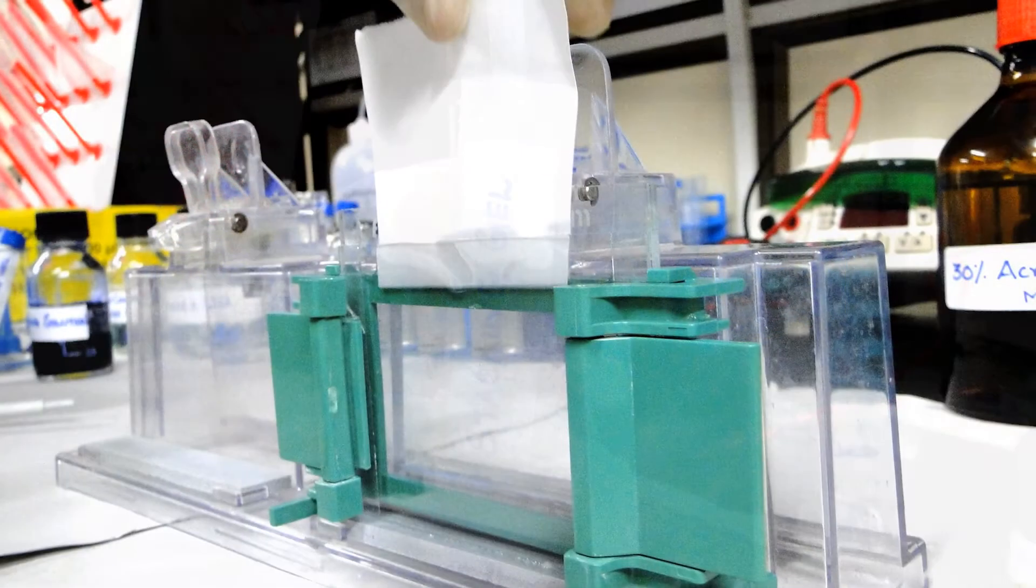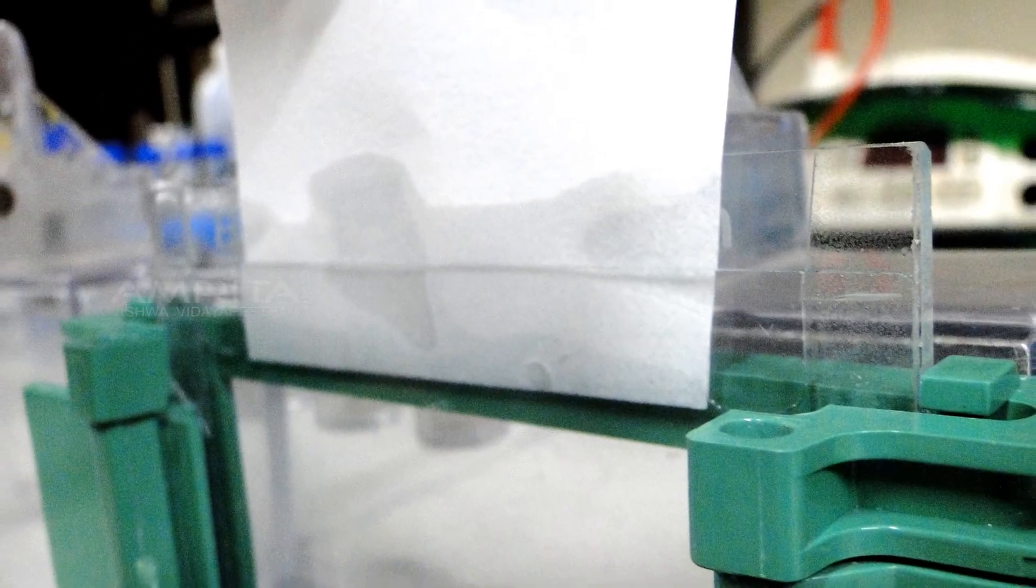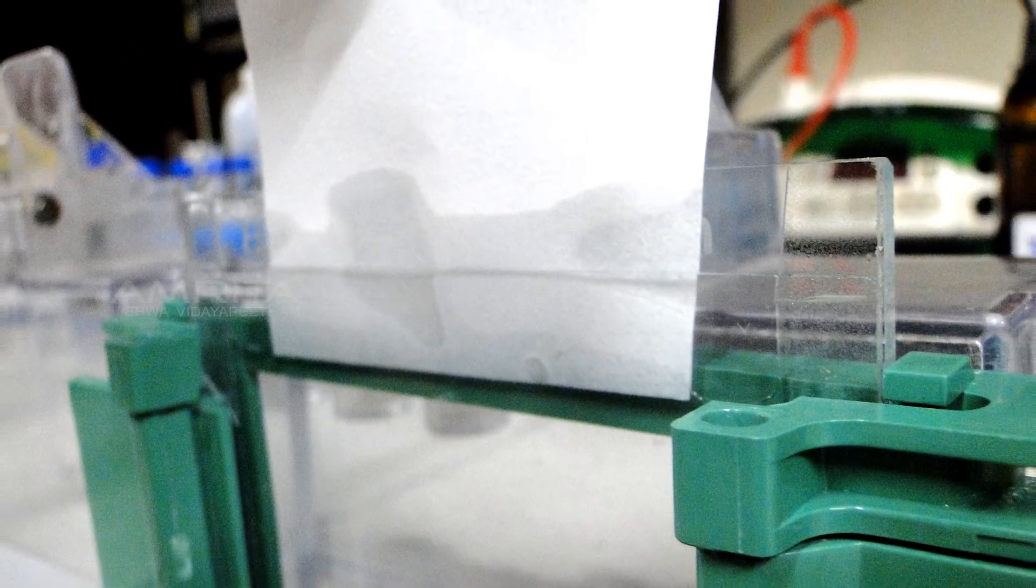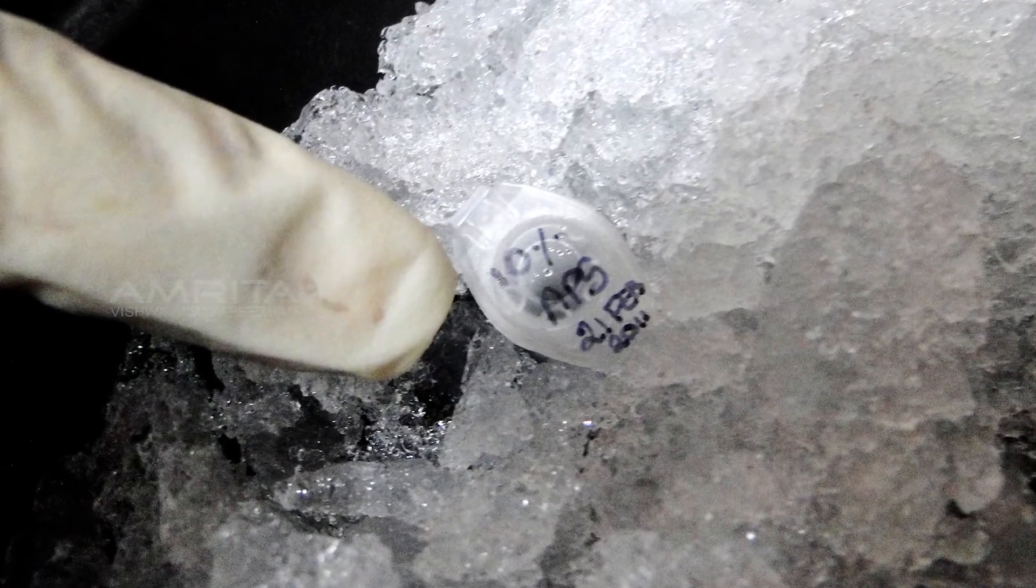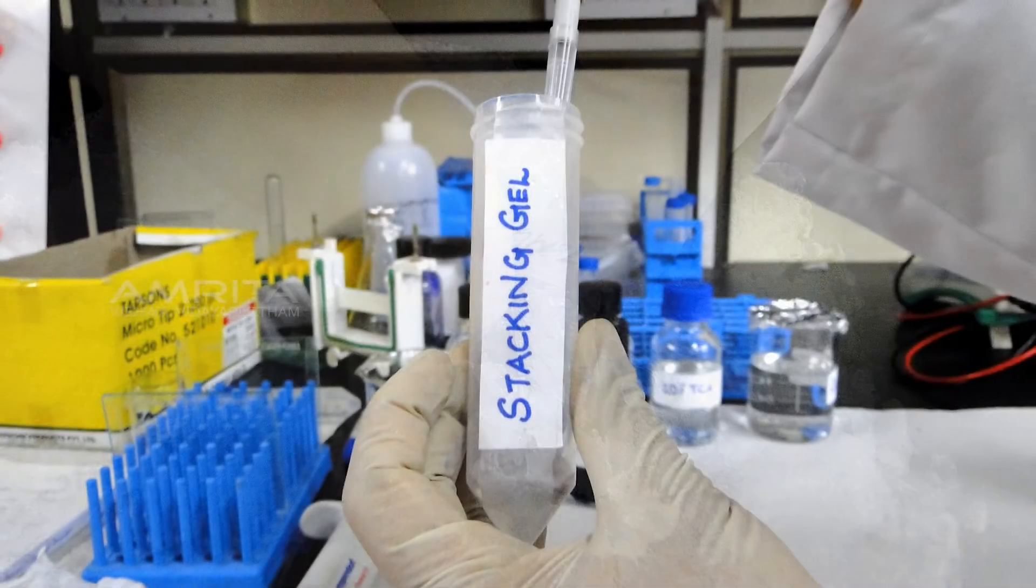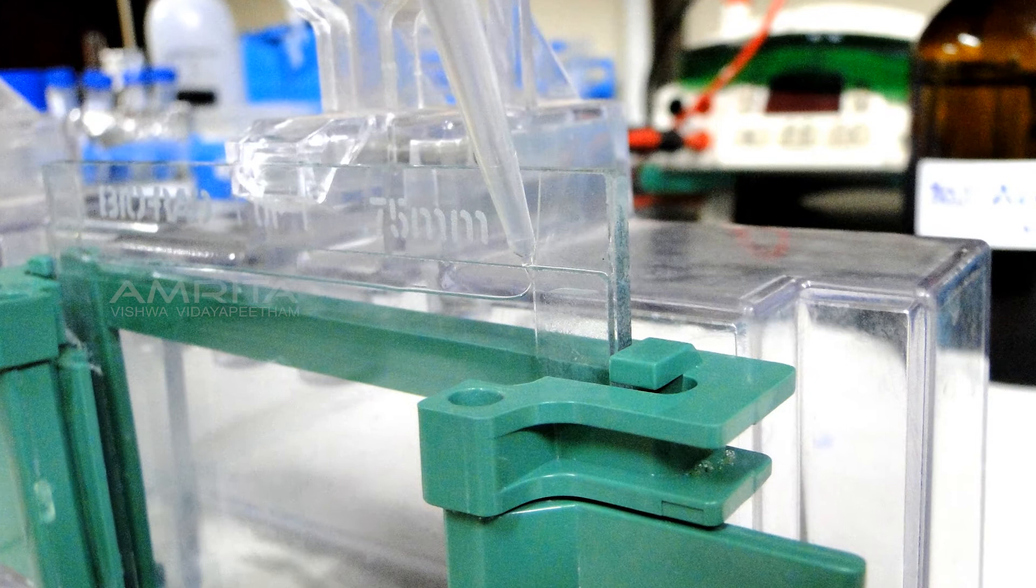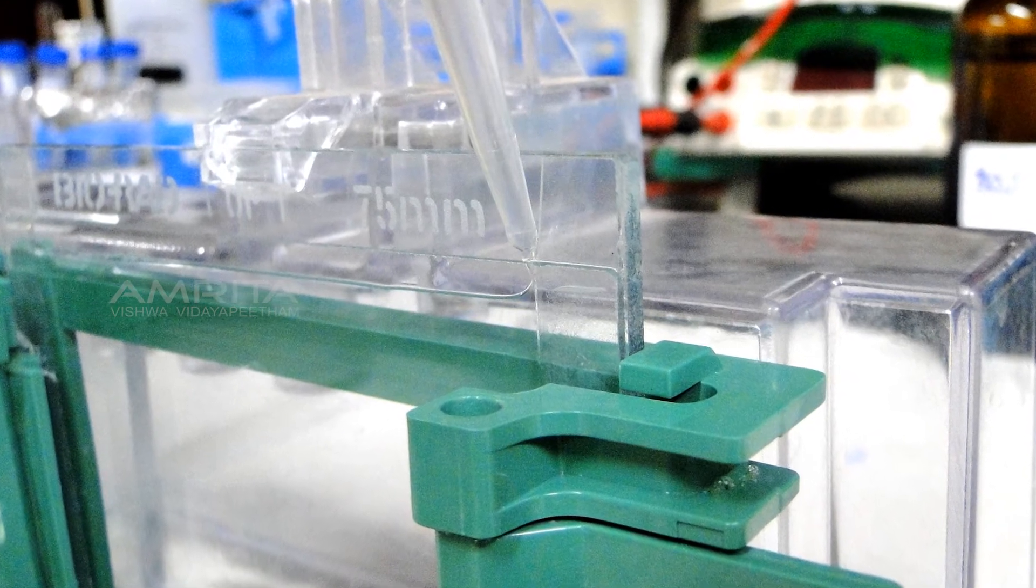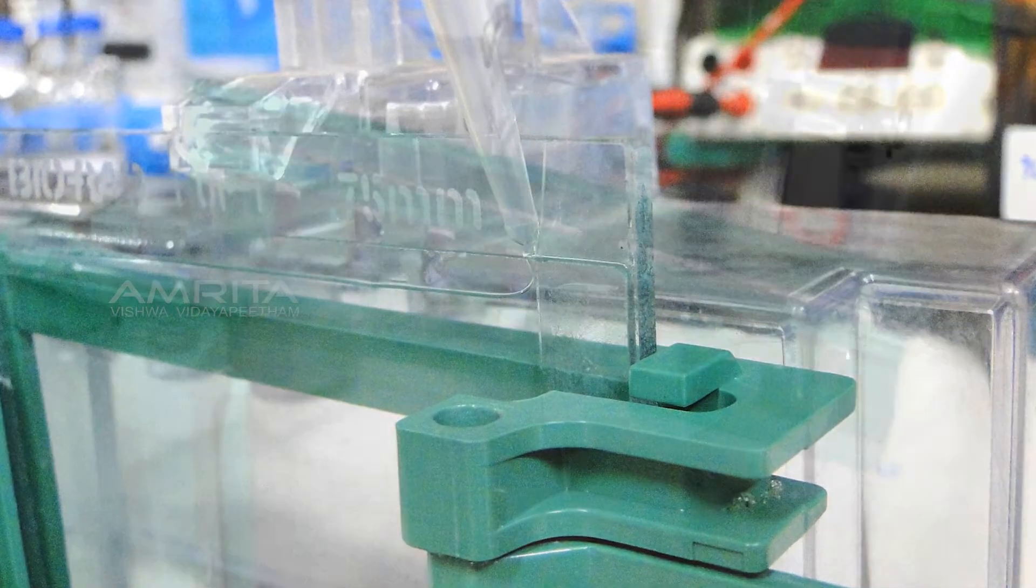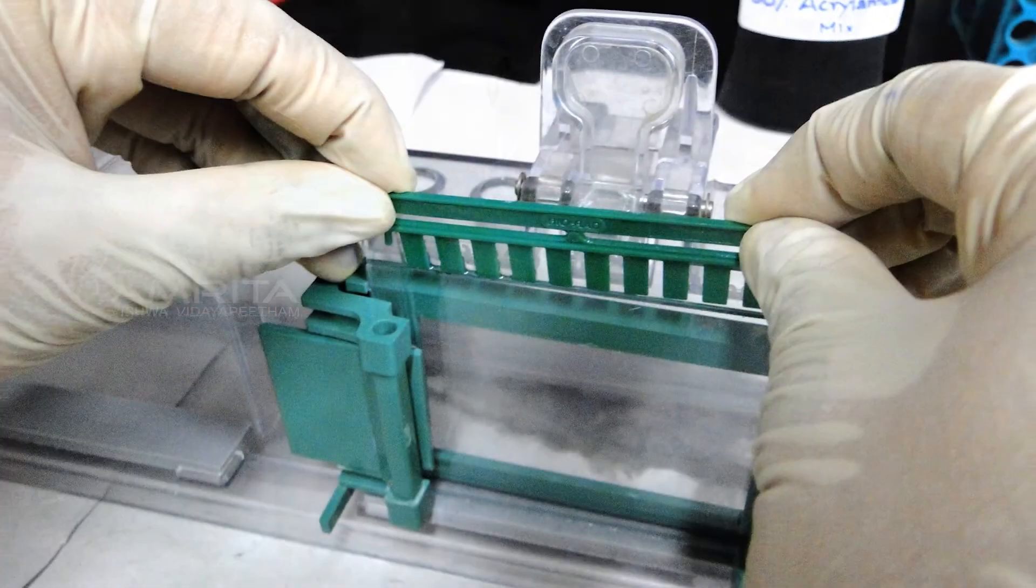After the gel has polymerized, the water-saturated n-butanol layer is absorbed by placing a blotting paper in between the glass plates. Now add 0.05 ml of APS and 0.005 ml of TEMED from the icebox to the blue capped tube. Immediately pour the stacking gel in between the glass plates till it overflows. Now place a comb in the stacking gel and allow the gel to polymerize for 10 minutes.